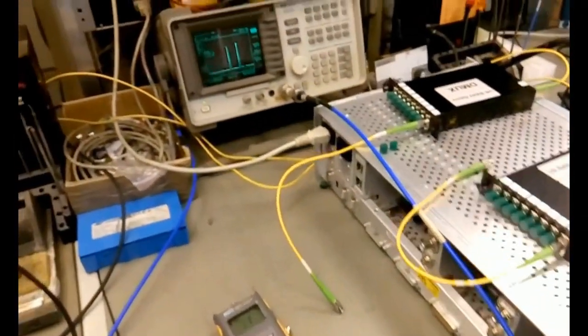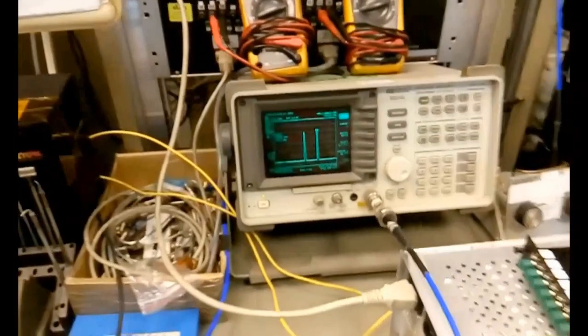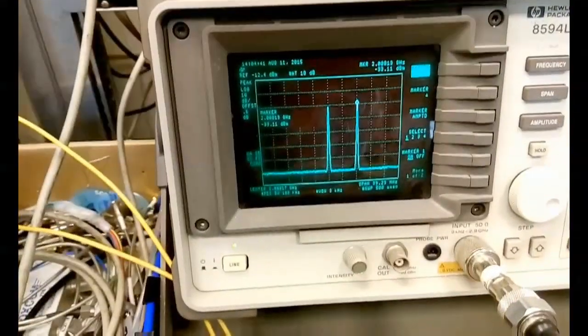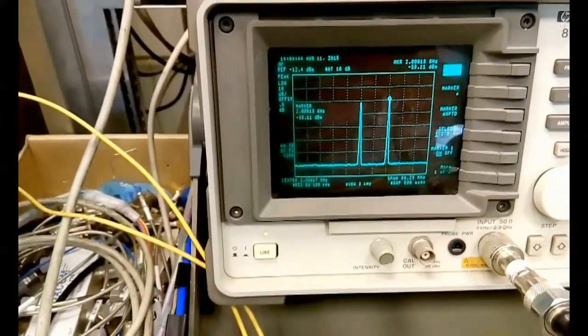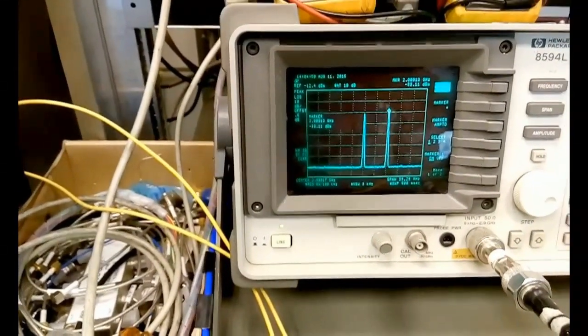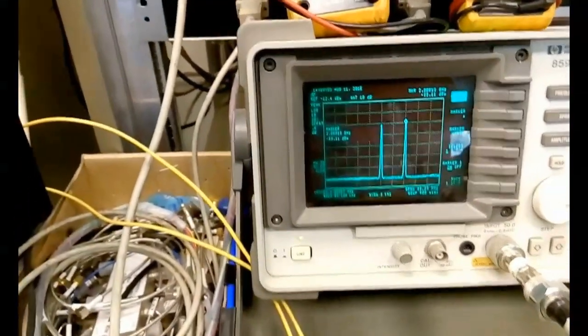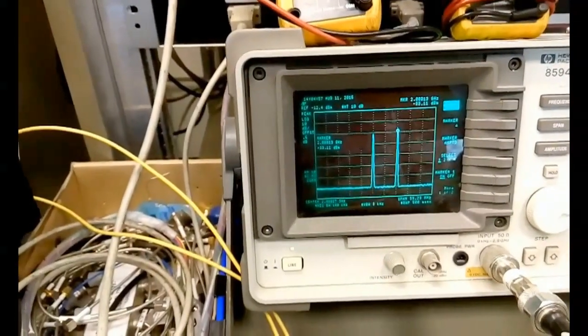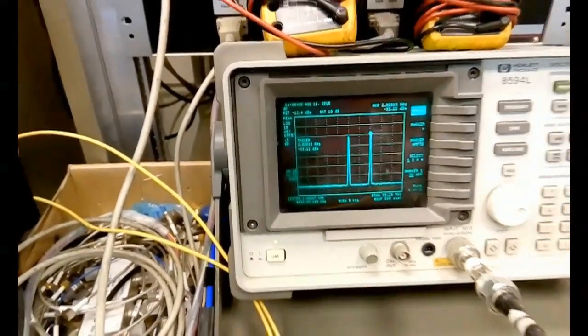Before we transfer the signal we need to configure our input RF signal. For this test we are using two signals in the L-band frequency both at minus 33 dBm with a total power of minus 30 dBm.